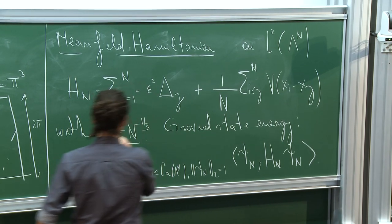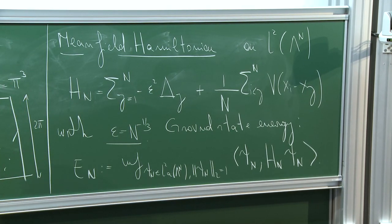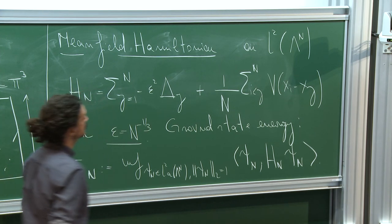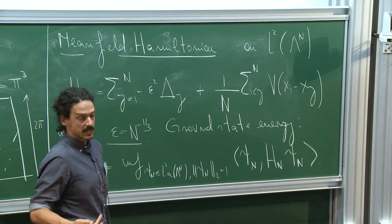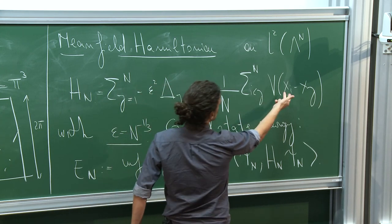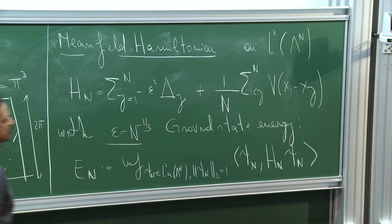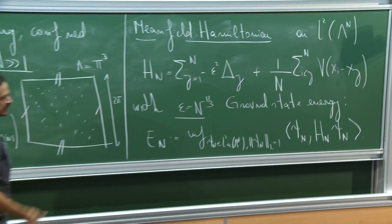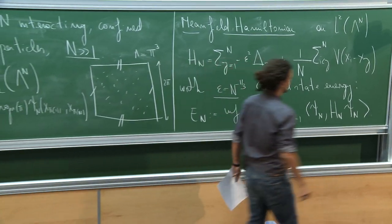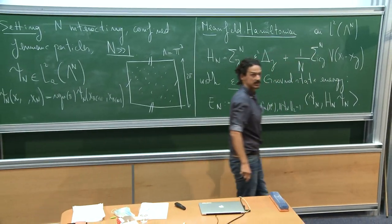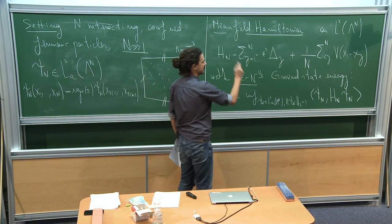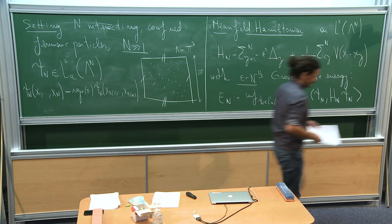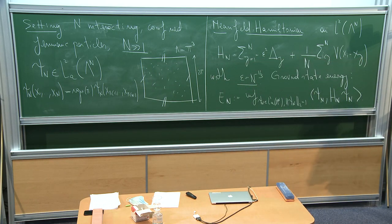Let me motivate why we have this epsilon. We want a balance between kinetic and potential energy. If V is bounded, the interaction energy over a reasonable class of states is of order N. The role of epsilon is to make the kinetic energy also of order N — so that kinetic energy and potential energy have a chance to compete.